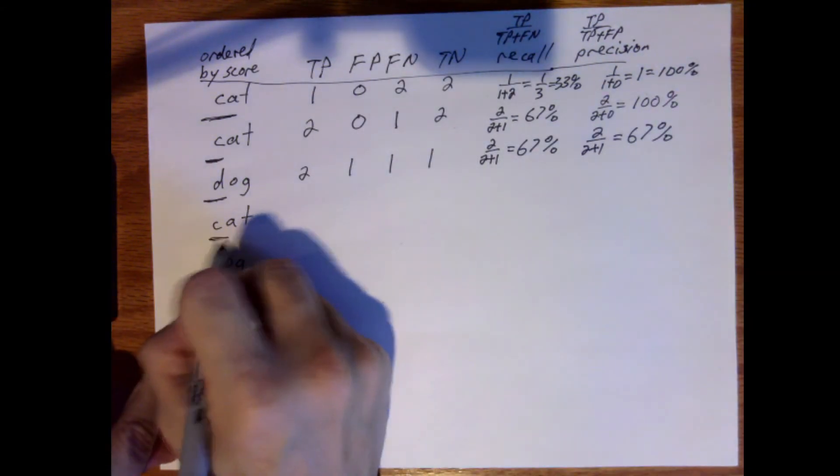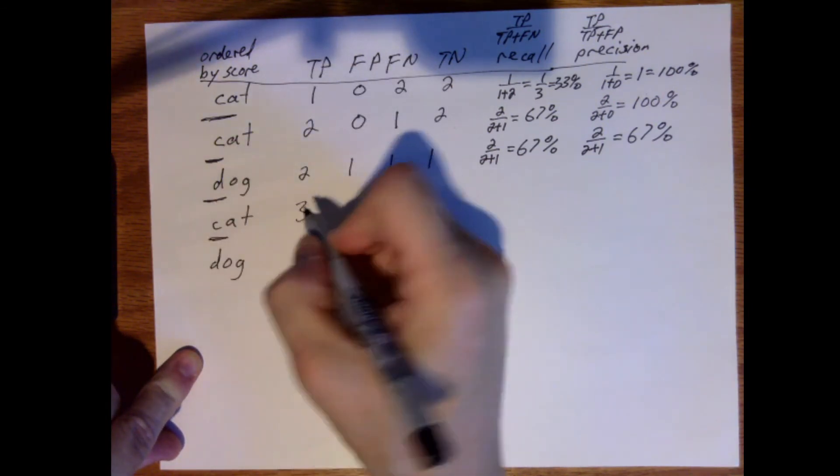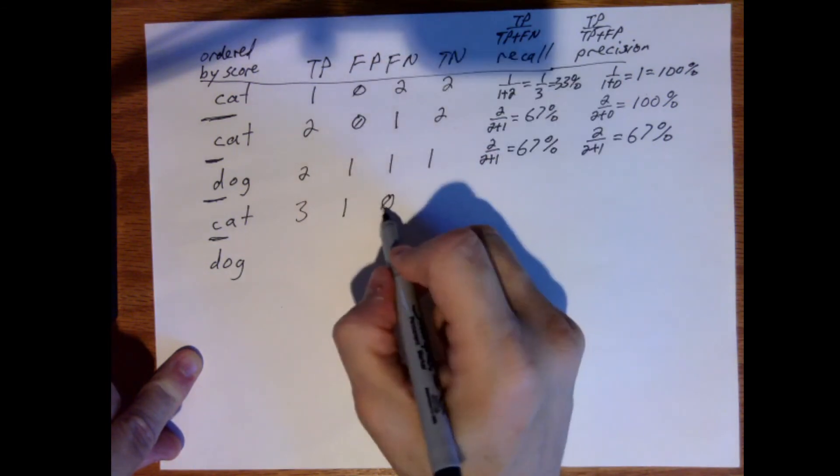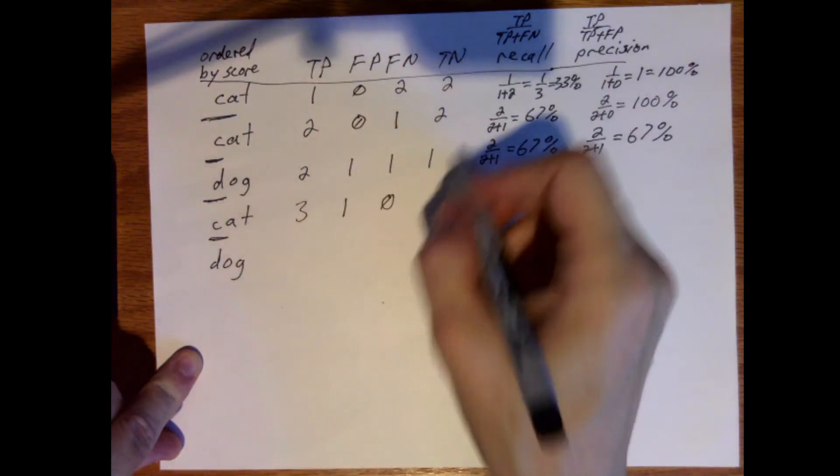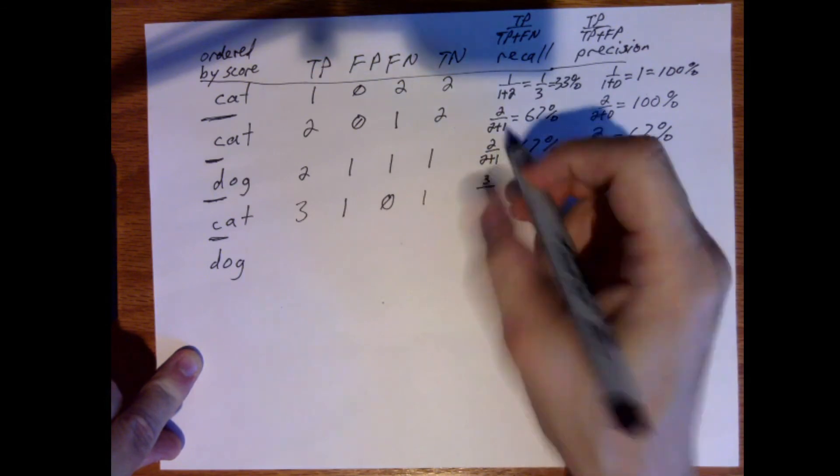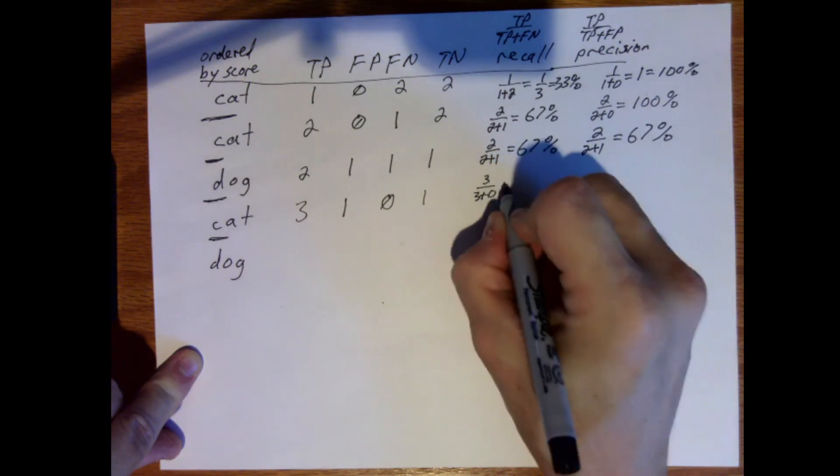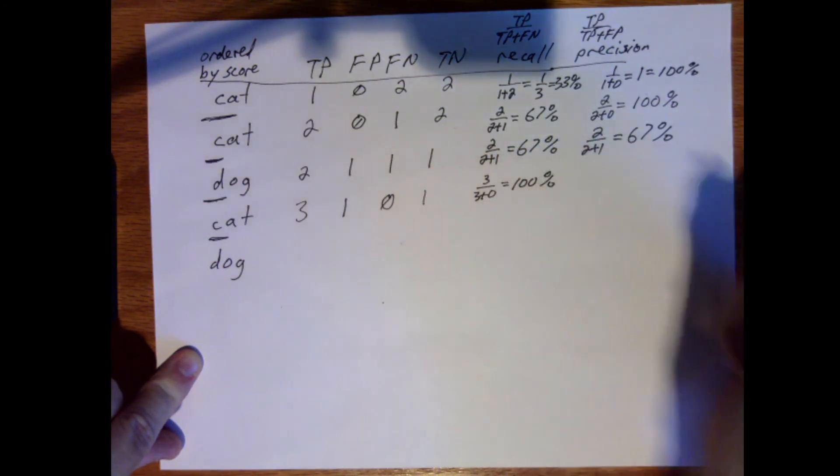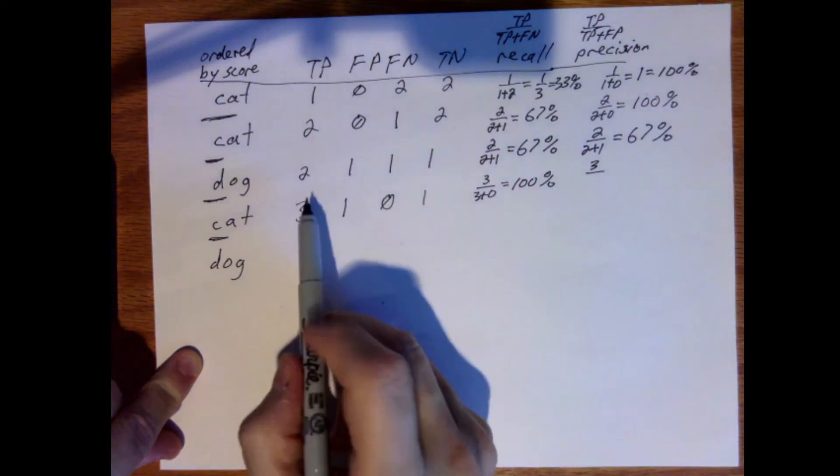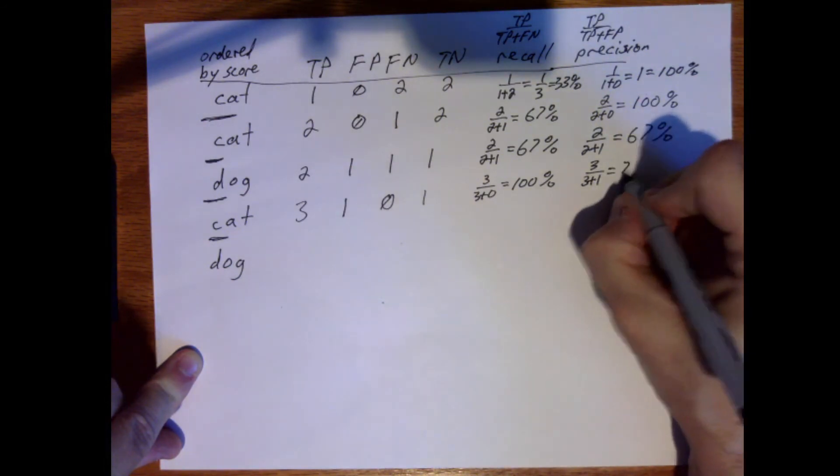Lower the threshold again. Now we get three cats and a dog. So our true positive value is three. False positive is one. False negative is zero now because there's no cats that were misclassified. And our true negative is still one. So now we get three divided by true positive plus false negative. Three plus zero, which is 100%. And our precision here will be three divided by true positive plus false positive. So three quarters, 75%.